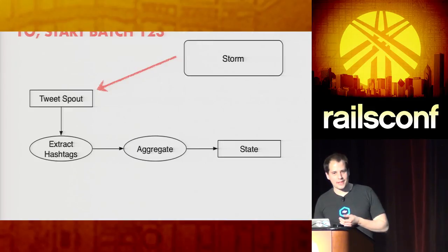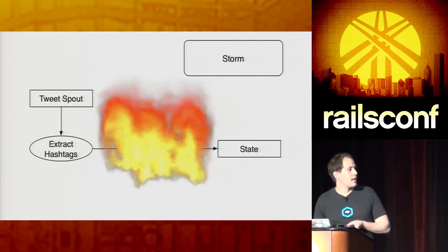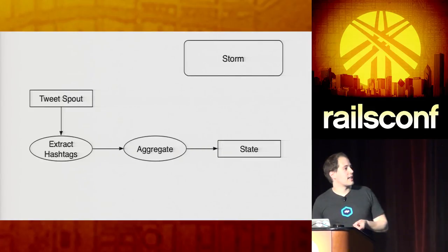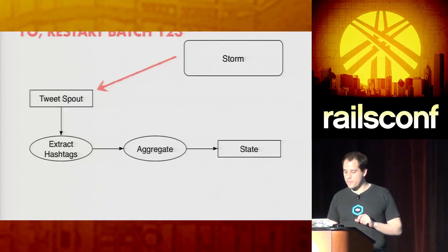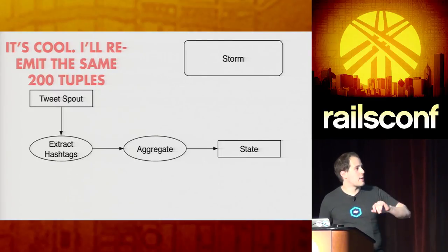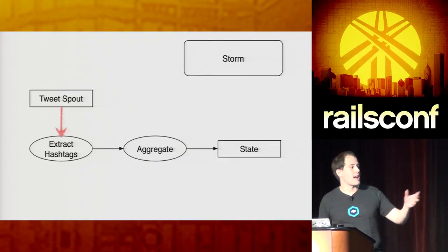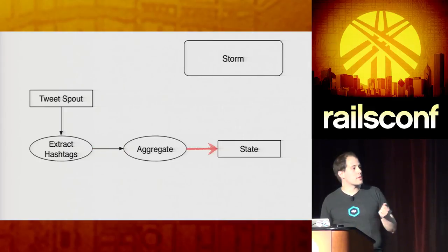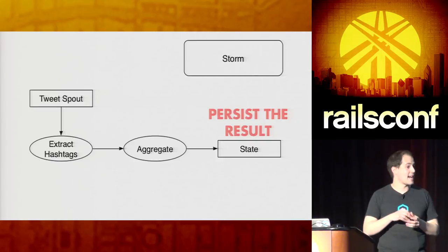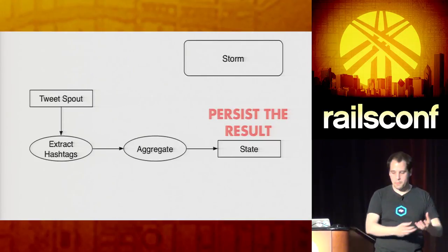To roll through this: we fetch 200 tuples, go through, aggregate, and it explodes. Eventually the Storm coordinator says 'I did not get a completion message — spout, we're going to restart batch 123.' The tweet spout re-emits exactly the same 200 tuples in the same order. If we successfully implemented our transforms to be purely functional — completely deterministic based off the input — we're going to get exactly the same output. When we get to the state, if something was successfully persisted and we get the same transaction ID, we know it's going to be exactly the same output. The main catch is transforms must be purely functional — that means not ever using Time.now within your transforms.